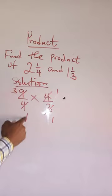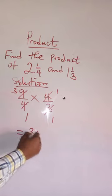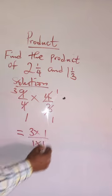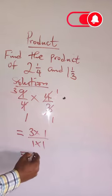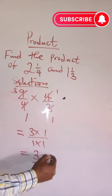So, we have 3 times 1 divided by 1 times 1. The answer is 3 over 1 which is 3.